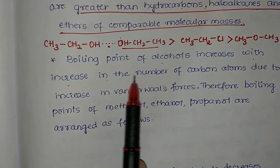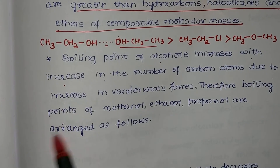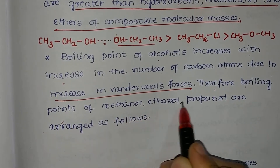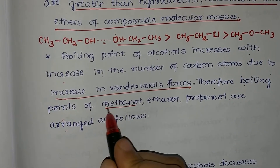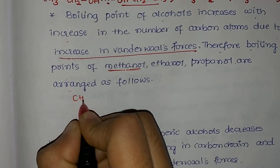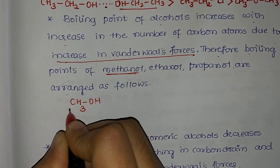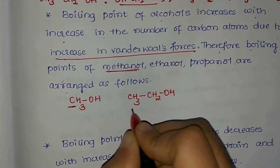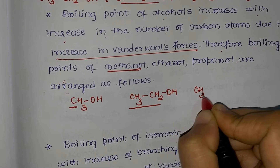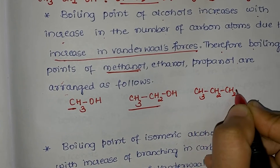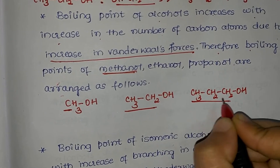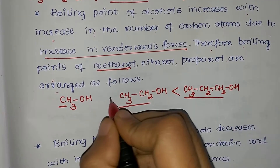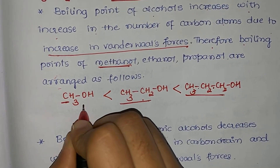The boiling point of alcohols increases with the increase in the number of carbon atoms, due to the increase in Van der Waal forces. For example, methanol is CH₃OH with one carbon atom, ethanol is CH₃CH₂OH with two carbon atoms, and propanol is CH₃CH₂CH₂OH with three carbon atoms. As the size of the carbon chain increases, Van der Waal forces also increase. Hence, propanol has a greater boiling point than ethanol, and ethanol has a greater boiling point than methanol.